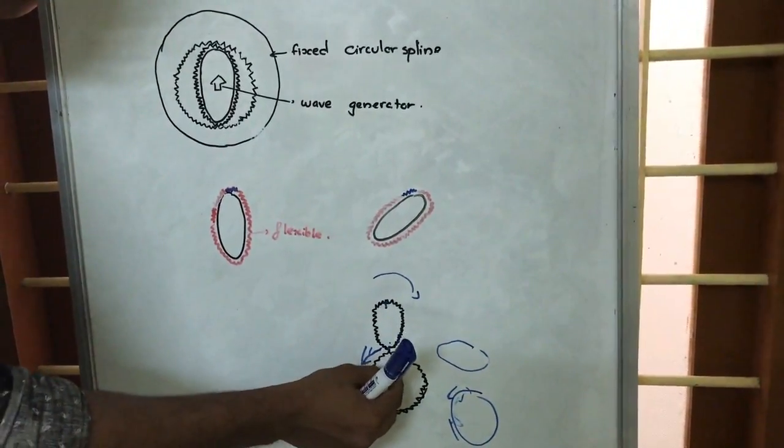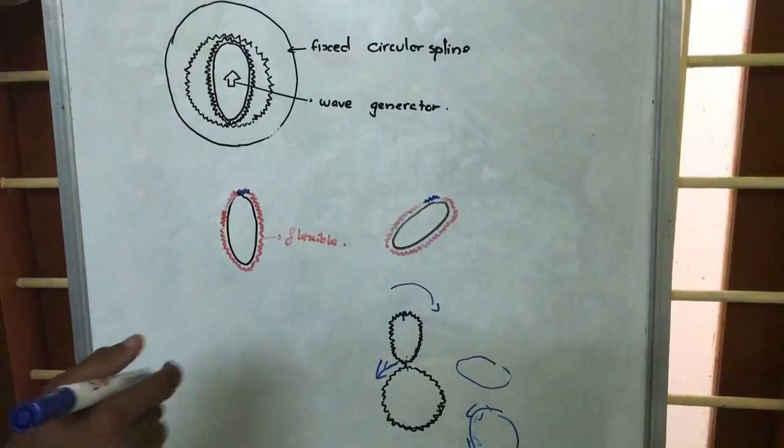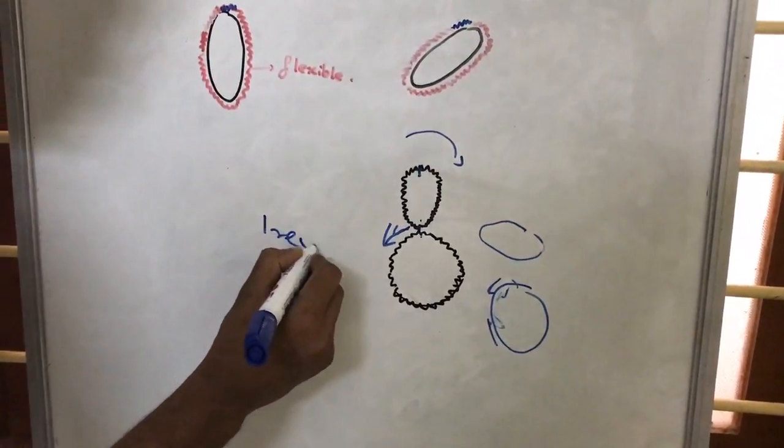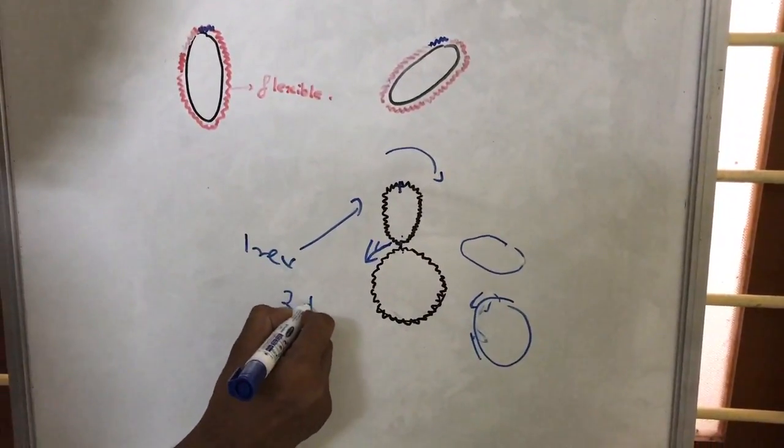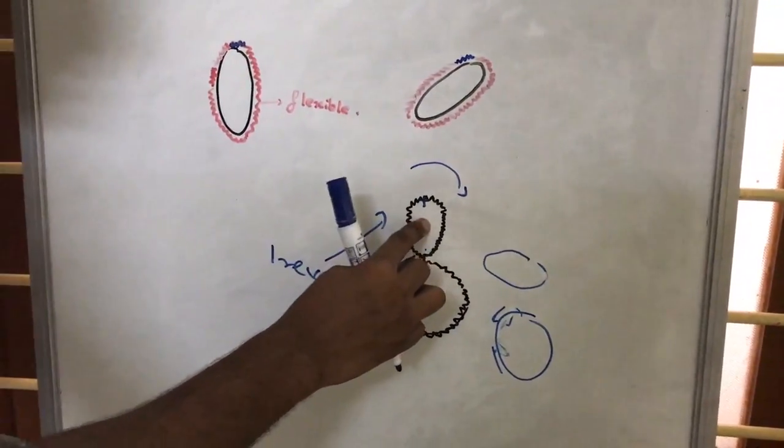If it is somewhat like this, for every one revolution of the elliptical gear there is a movement of two teeth in the circular gear.